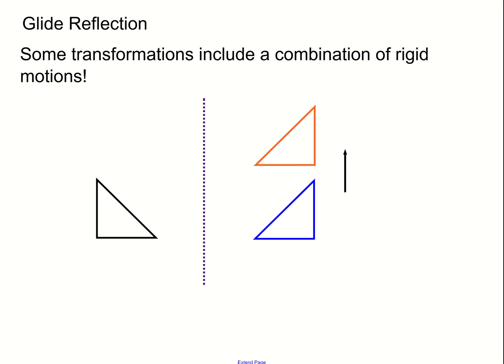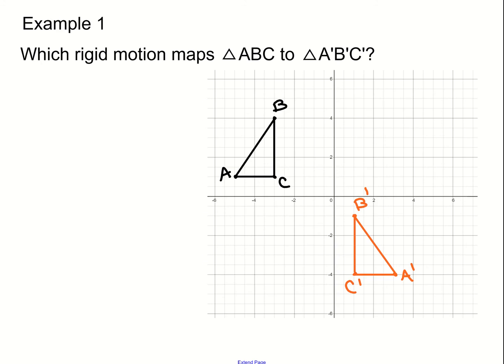Some transformations include a combination of rigid motions just like this glide reflection. For example, which rigid motion maps triangle ABC to triangle A prime, B prime, C prime? If you look at ABC in black and the orange triangle, they look like reflected versions of each other. If you were to flip this, you would get the orange triangle and then you'd have to translate it so that it slides down somehow.